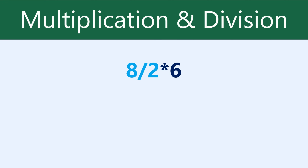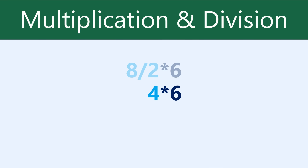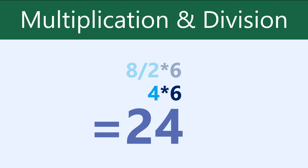Now multiplication and division are considered to be on the same level. That means if you have both of them in your formula, they're calculated from left to right. In this example, we'll do the division first, and then the multiplication. If we wanted the multiplication to happen first, we could just put it in parentheses, or we could rearrange the formula so the multiplication was on the left.